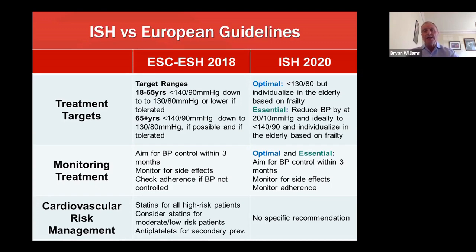In the international guideline, they recommend getting down to 130 over 80 as optimal care, or lower in all patients, again individualizing treatment as necessary in older patients because they may not tolerate these low levels of pressure. In terms of the essential recommendation in the ISH guideline, it's to reduce blood pressure by at least 20 mmHg if possible, and aim in all patients if possible to get blood pressure below 140 over 90, based on considerations of tolerability and frailty.